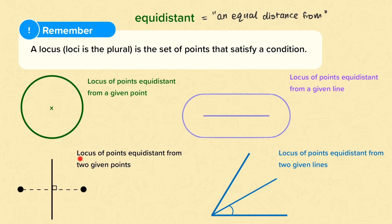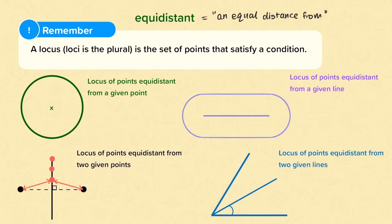If I'm asked for the locus of points that are equidistant from two given points, that means that any point that I draw has to be an equal distance from here as it is from here. So if I look at these points as being equidistant from these given points, I can see that they all form a straight line.